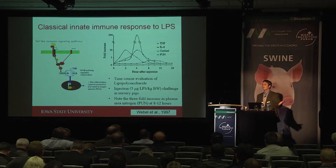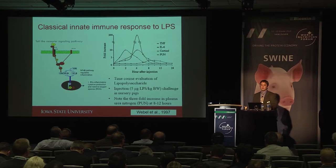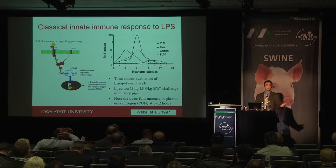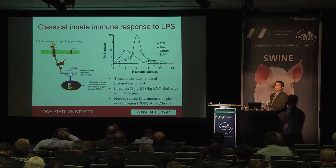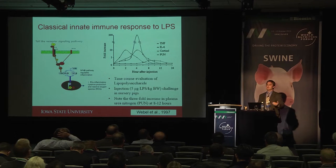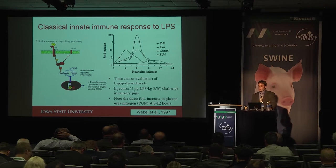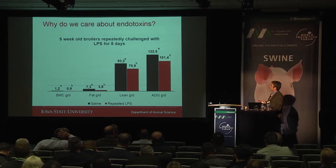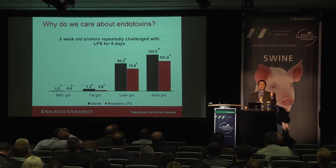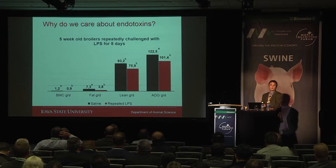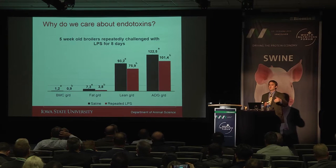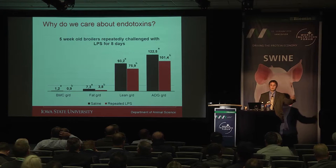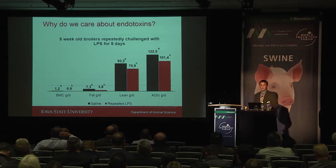This is just a one-off situation; in the field, pigs see these immunogenic compounds all the time — it's a 24/7 argument. So what happens if we give animals a repeated dose of endotoxin over time? This is work we did in broilers — five-week-old broilers given an injection of endotoxin or LPS every two days for eight days, stepping up the dose by 20-30-40% to get around tolerance.